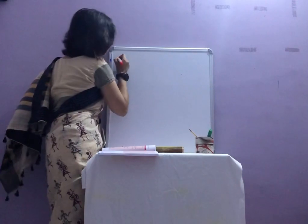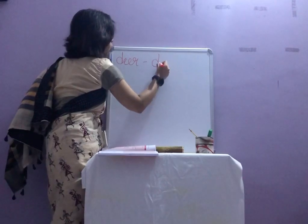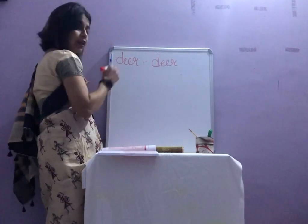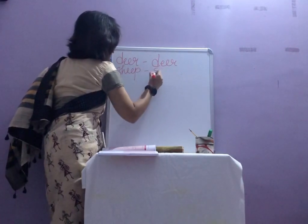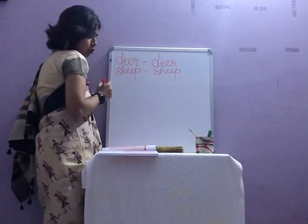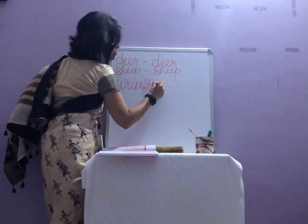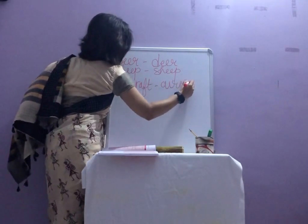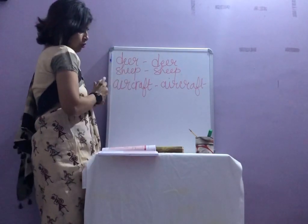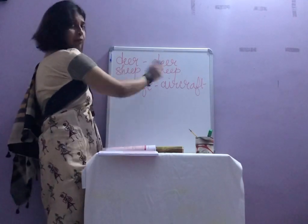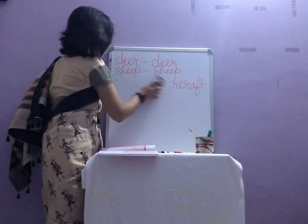Now, when there are words like deer — there is no change in plural. Similarly, sheep — there is also no change. Then also the word aircraft: saying 'aircrafts' is wrong. Aircraft means it's plural and singular both are the same. No plural form differs. Whether it's singular or plural, the word stands the same for both.